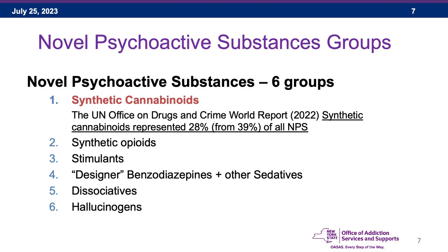There are different groups of novel psychoactive substances: synthetic cannabinoids, synthetic opioids, stimulants, designer benzodiazepines and other sedatives, dissociatives, and hallucinogens. According to the UN Office on Drugs and Crime World Report 2022, synthetic cannabinoids represented 28% — down from 39% — of all novel psychoactive substances reported.